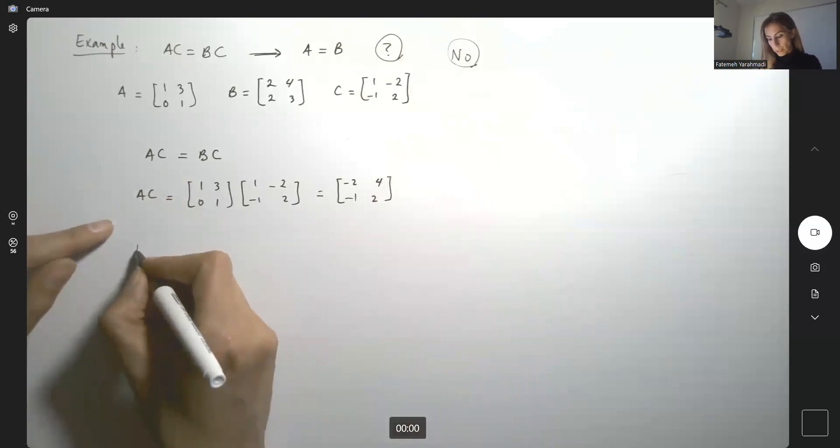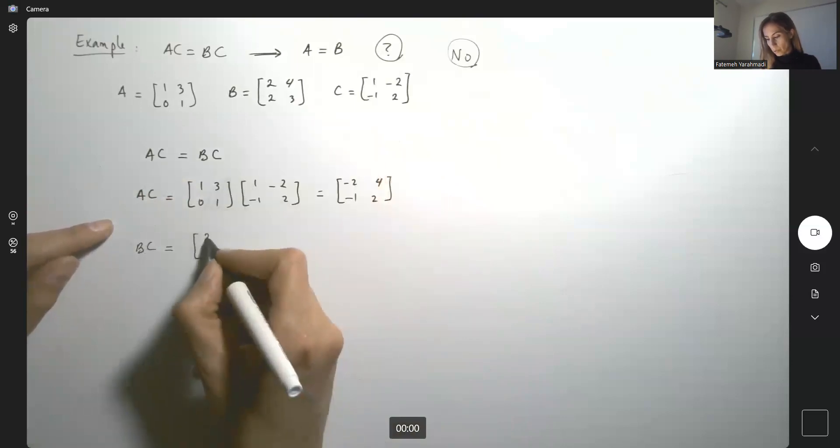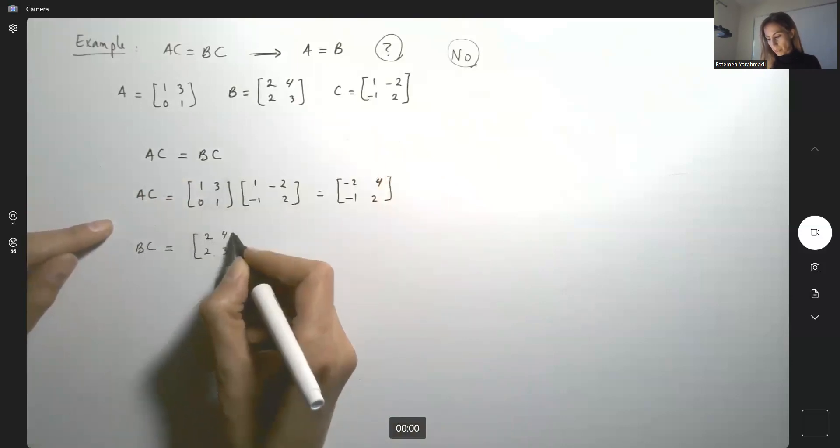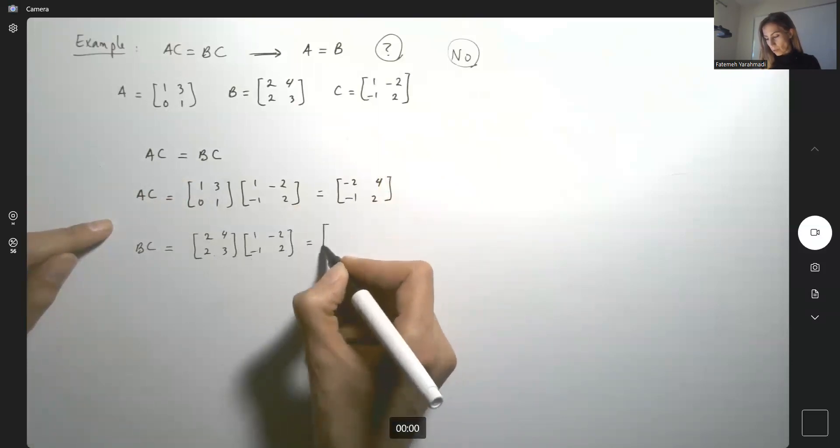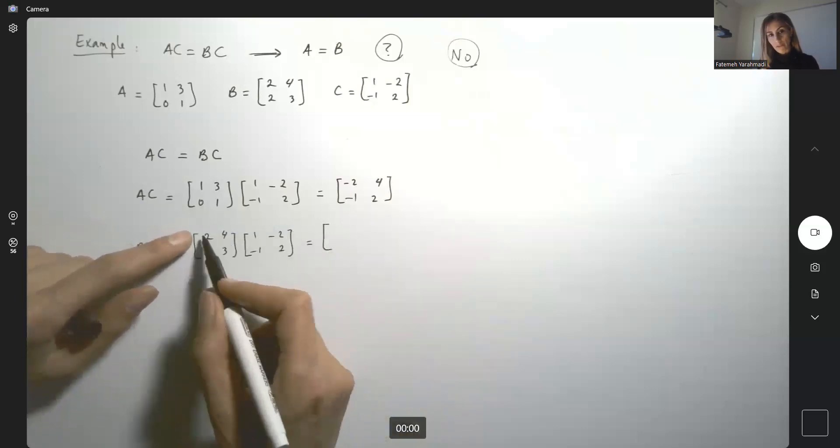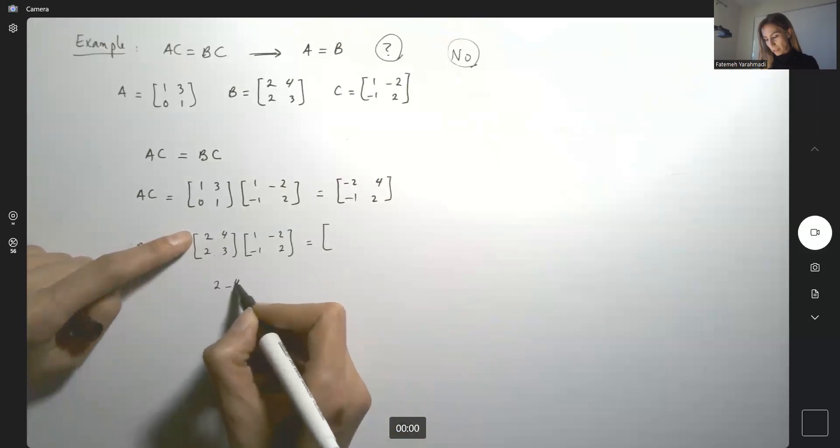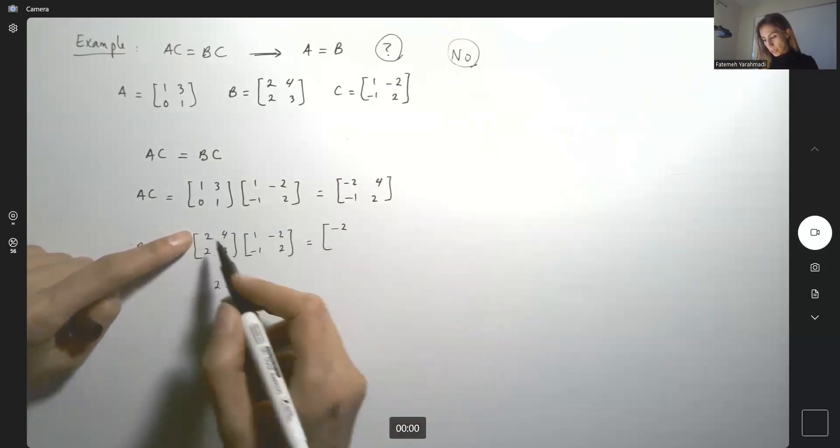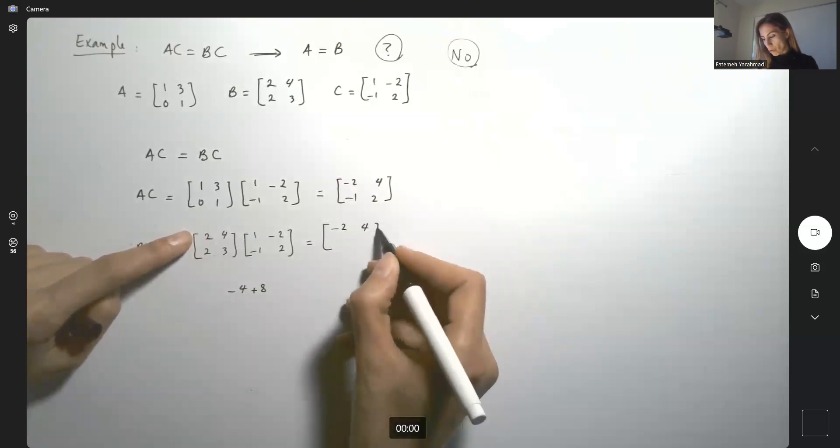What about BC? We're going to find the product between B and C. B is 2, 4, 2, and 3. And C is the same, 1, negative 2, negative 1, and 2. We're going to take the first row, multiply by the first column. So you get 2, minus 4, which is just negative 2. And then first row multiplied by the second column, negative 4, plus 8, which is just 4.